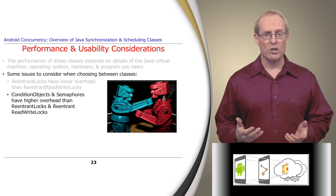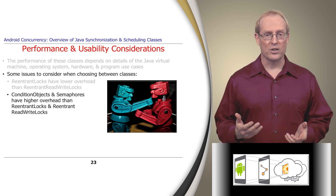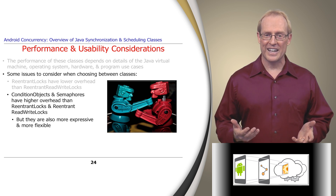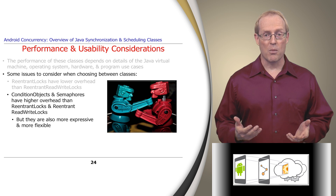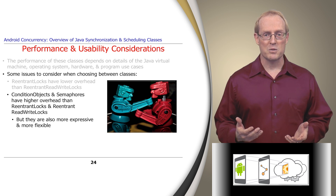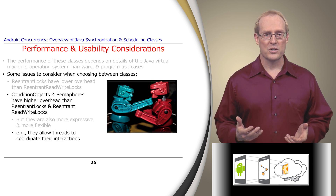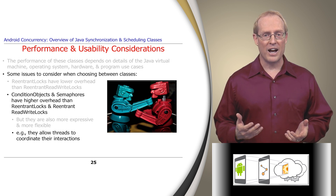Condition objects and semaphores generally have more overhead than reentrant locks and read-write locks, because the former do sleep locks whereas the latter can do spin locks. On the other hand, condition objects and semaphores are much more expressive since they provide greater capability. For example, reentrant locks and reentrant read-write locks must be used in a fully bracketed manner, where the thread that acquires a lock must be the one to release it. In contrast, condition objects and semaphores allow threads to coordinate their processing via more flexible interaction patterns.